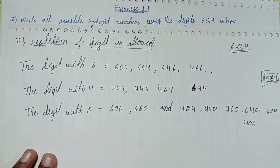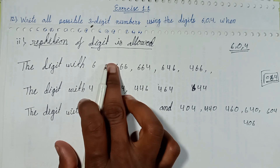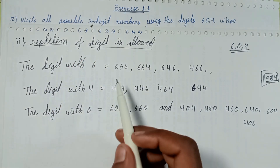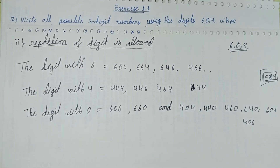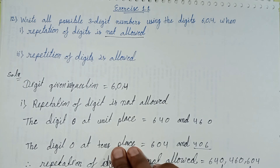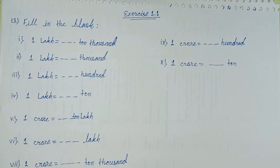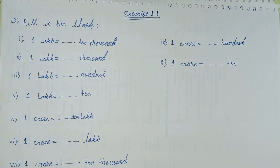The total numbers when repetition is allowed comes to sixteen. That is the answer for the second situation. Question number 13 on filling the blank will be discussed in the next episode — link given in description. Question number 11 solving episode link is also in the description. See you in the next episode with a new question. Thanks for watching.